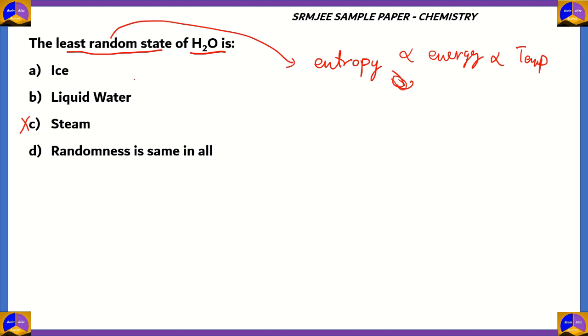liquid water will be more random than ice. So that makes ice the least random state of water. Option A, ice becomes the least random state of H₂O. And since randomness that is entropy depends upon energy, which depends upon temperature, that means that option D is also incorrect.